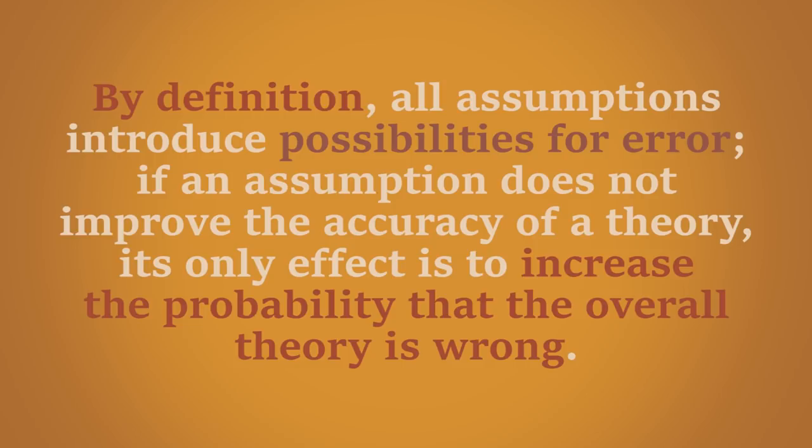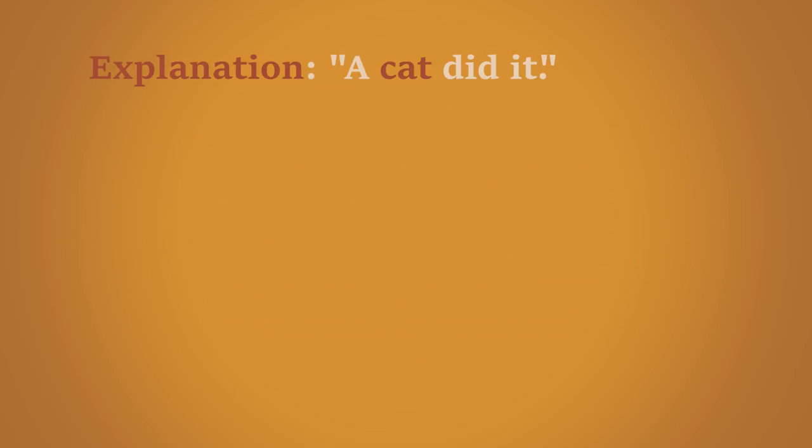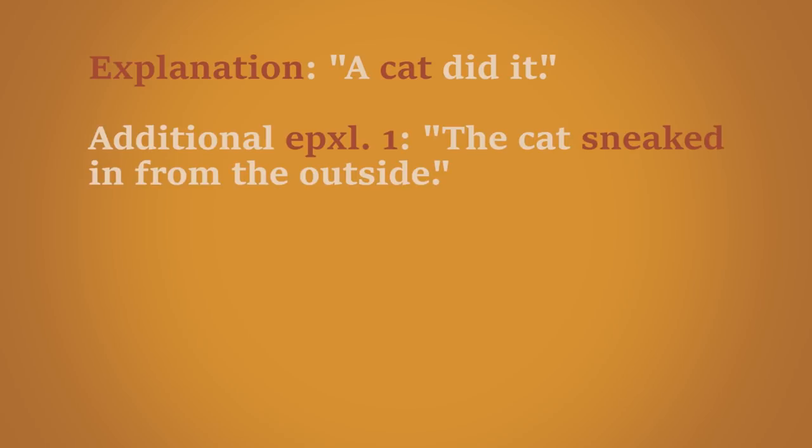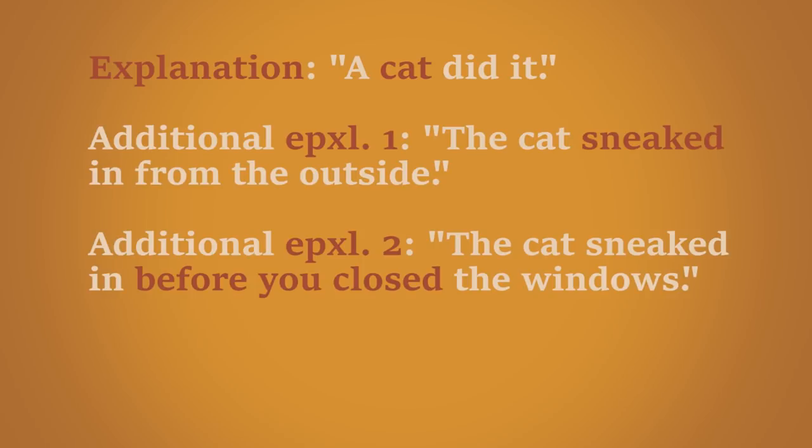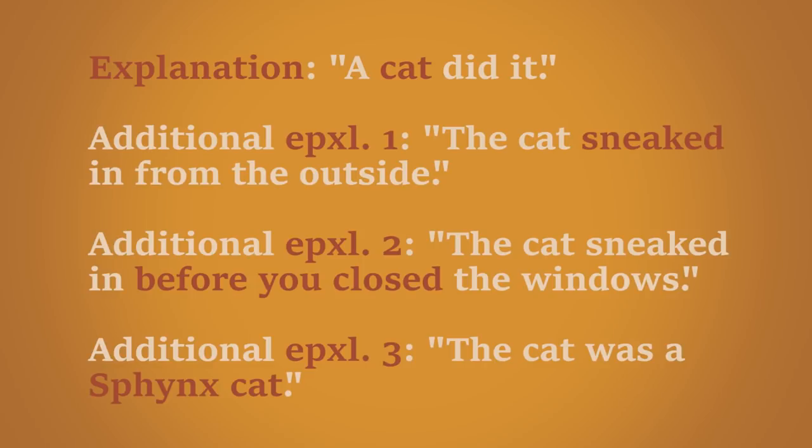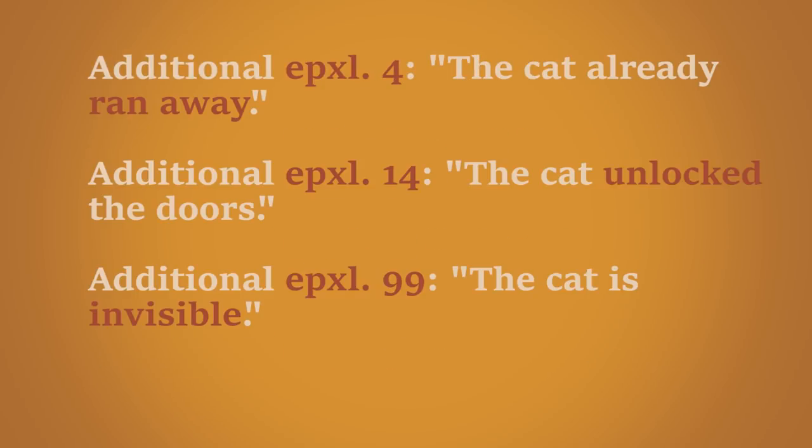Let's put it in other terms. If we get back to little Jimmy and the broken vase, with every additional explanation he offered, the cat theory increased in complexity, meaning it rested on an increasing number of conditions that had to be met in order for the cat to break the vase.